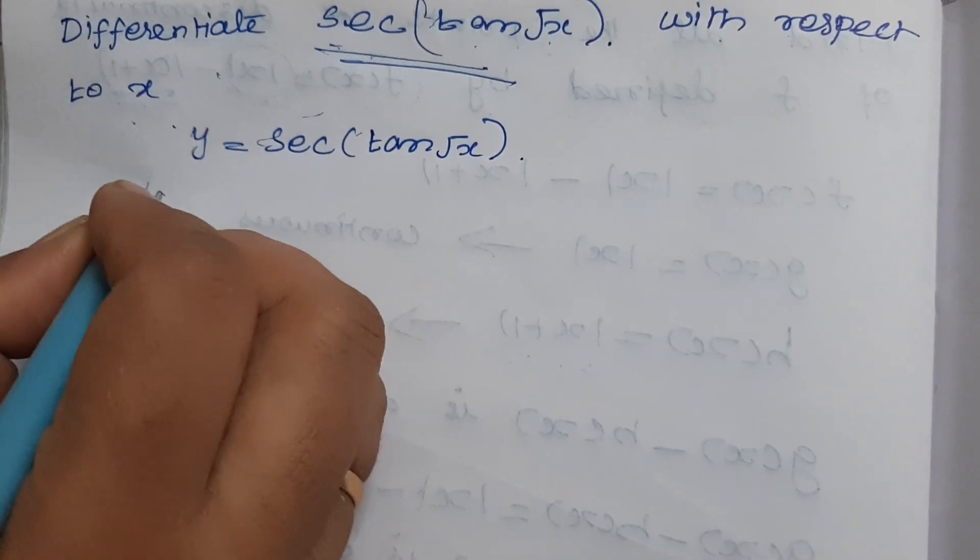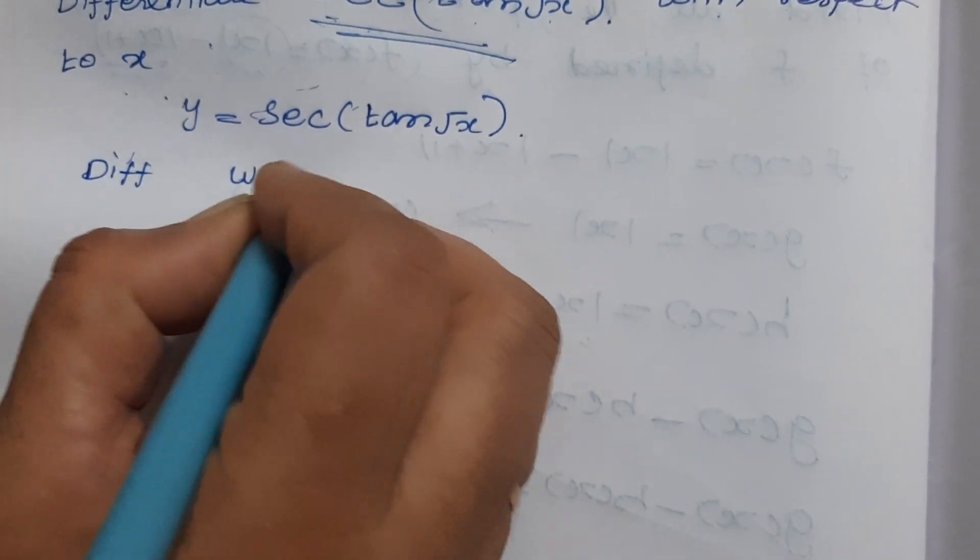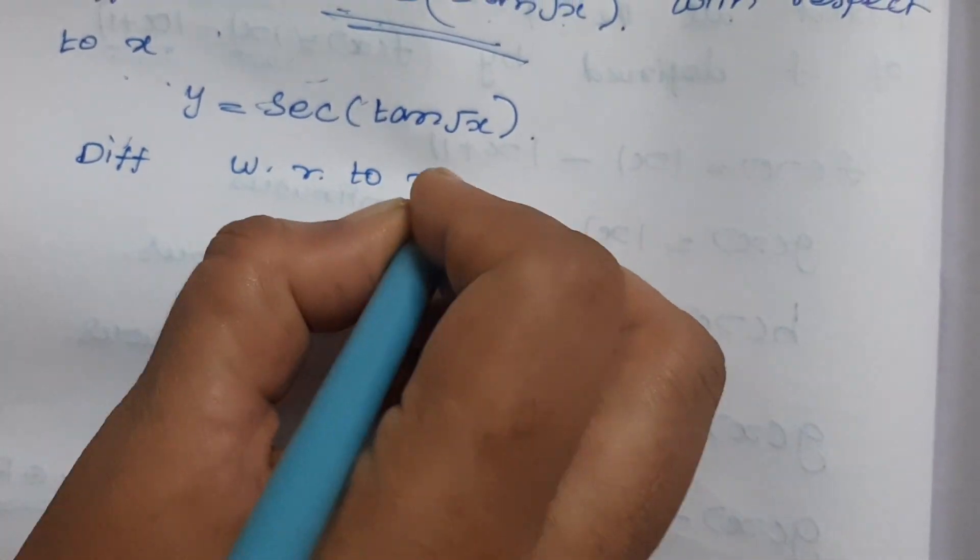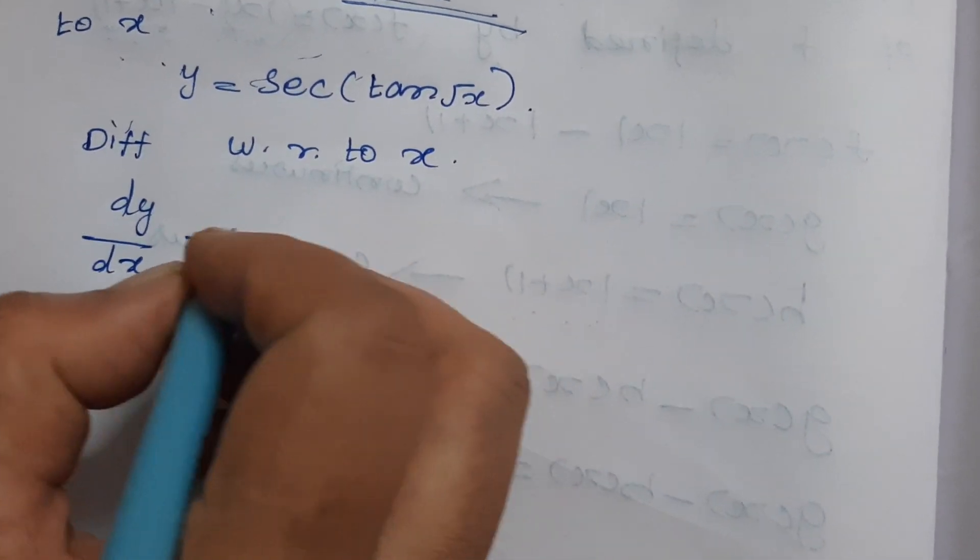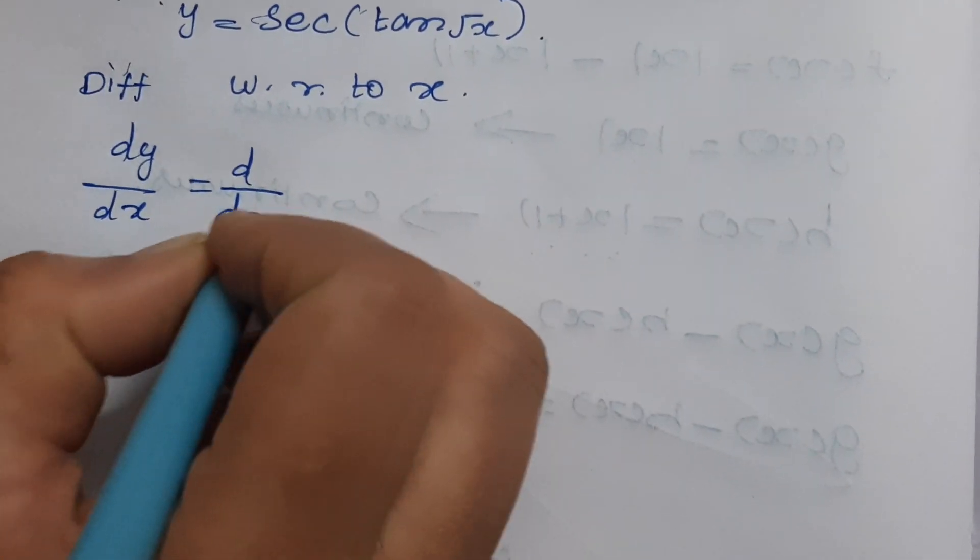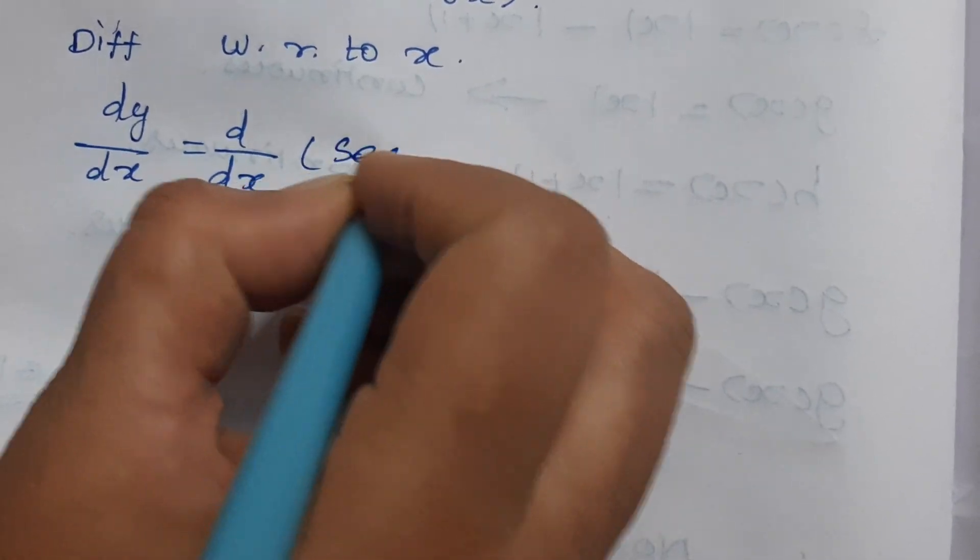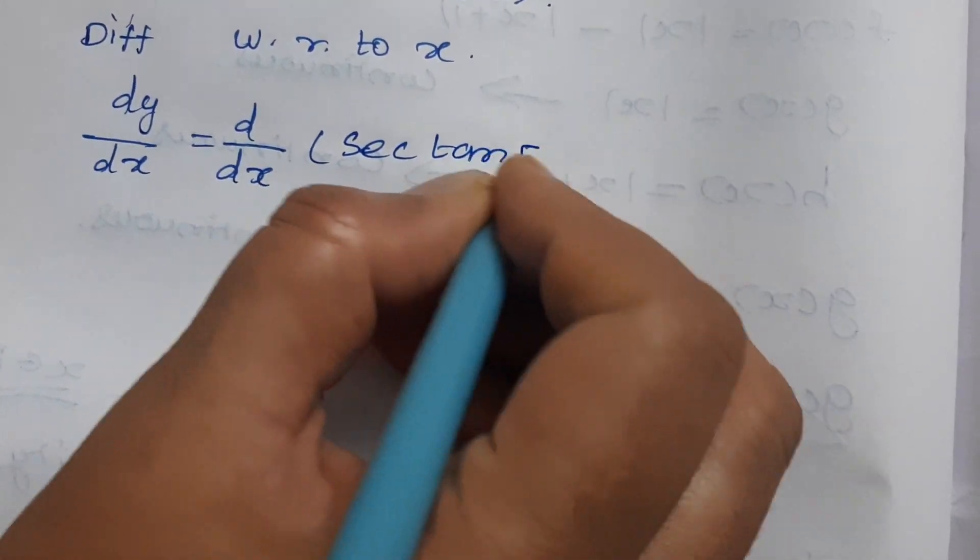Differentiate with respect to x. So dy/dx equals d/dx of sec(tan√x).